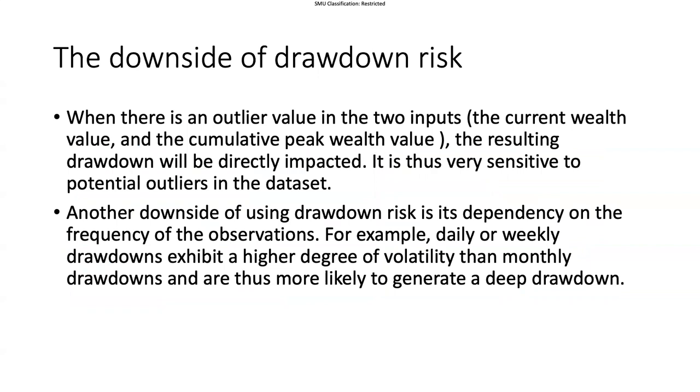These two inputs may have outlier values. Outliers would be a sudden jump in the price or the sudden drop in the price. This gives us high sensitivity. This exposes the drawdown risk measure to high sensitivity to the inputs. It depends on the inputs and it's very sensitive.